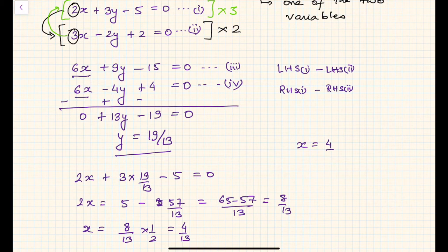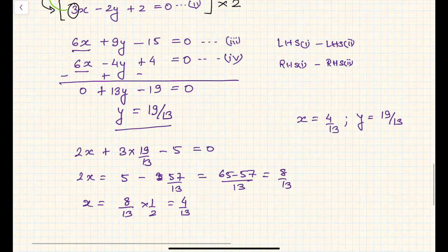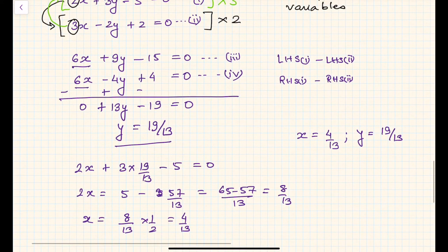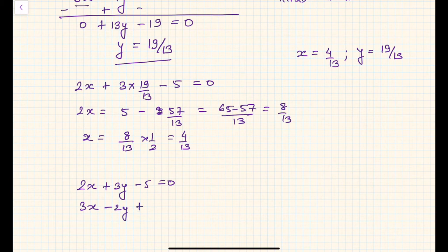So x = 4/13 and y = 19/13 is the solution for this pair of equations. Another way of doing it — instead of substituting y into an equation — is to try and eliminate y directly. Let us rewrite the equations once again: 2x + 3y − 5 = 0 and 3x − 2y + 2 = 0. This time we will eliminate y.